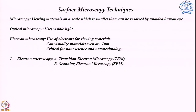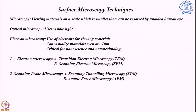Electron microscopy has two different versions: one is transmission electron microscopy and one is scanning electron microscopy. On the other hand, scanning probe microscopy techniques have also been developed which allow us to have an idea about the surface of different materials. These include scanning tunneling microscopy and atomic force microscopy. All four systems — TEM, SEM, STM, and AFM — we will cover one by one in the following session.